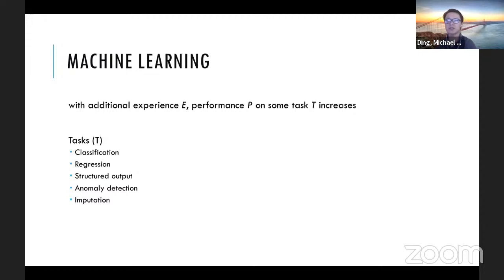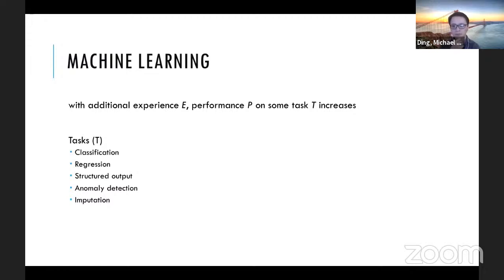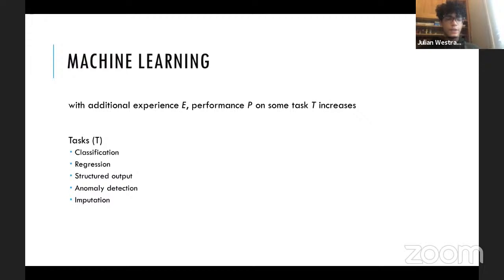Let's consider some tasks in more detail. Classification: the goal is to take an input and identify it or place it into categories. We've already seen an example — distinguishing cats from not cats.